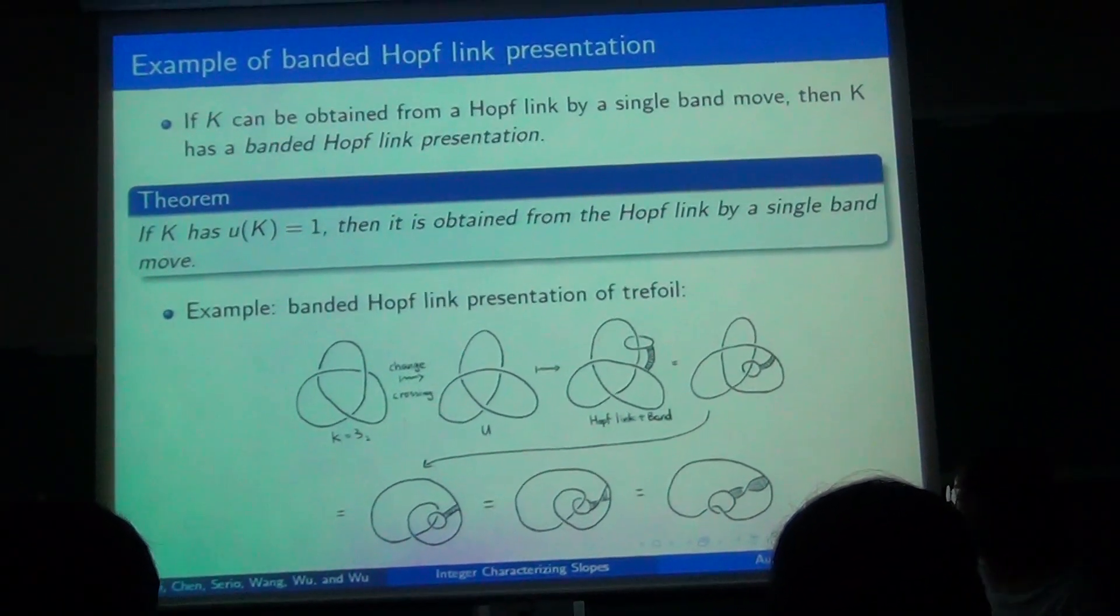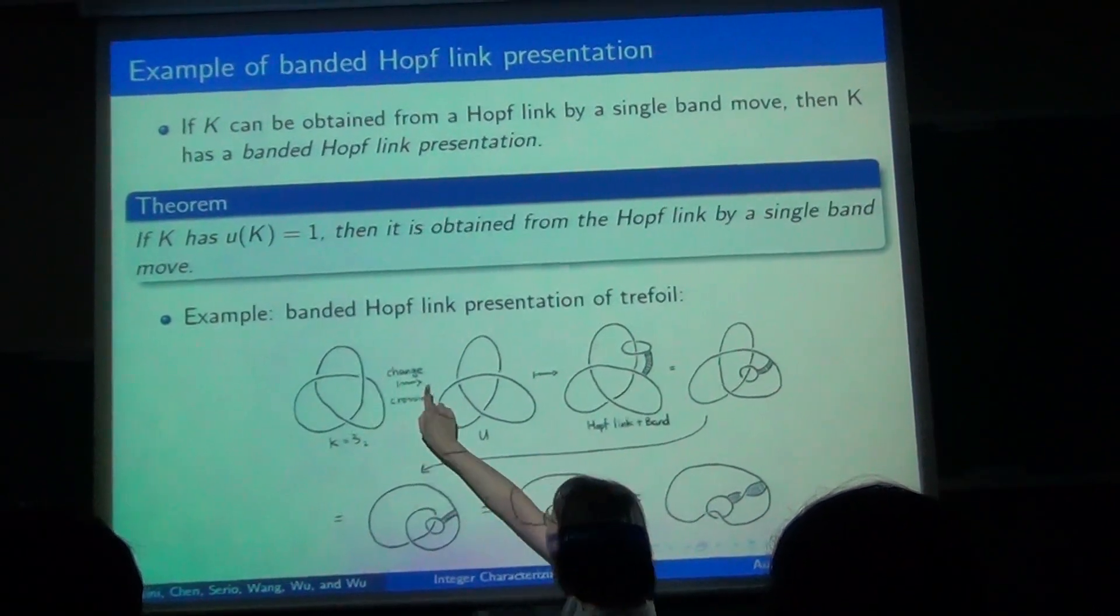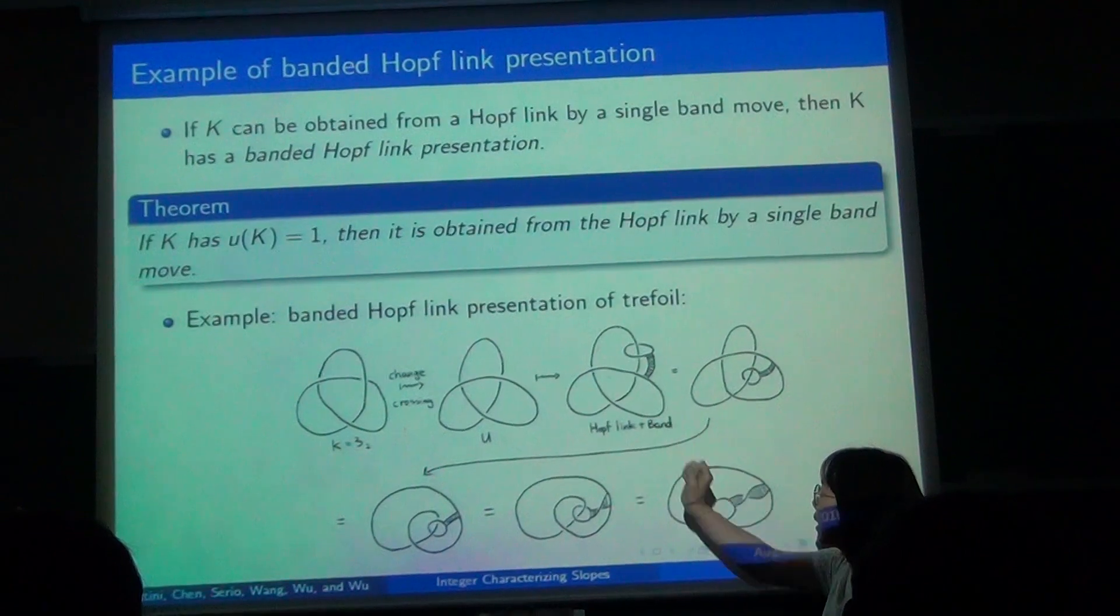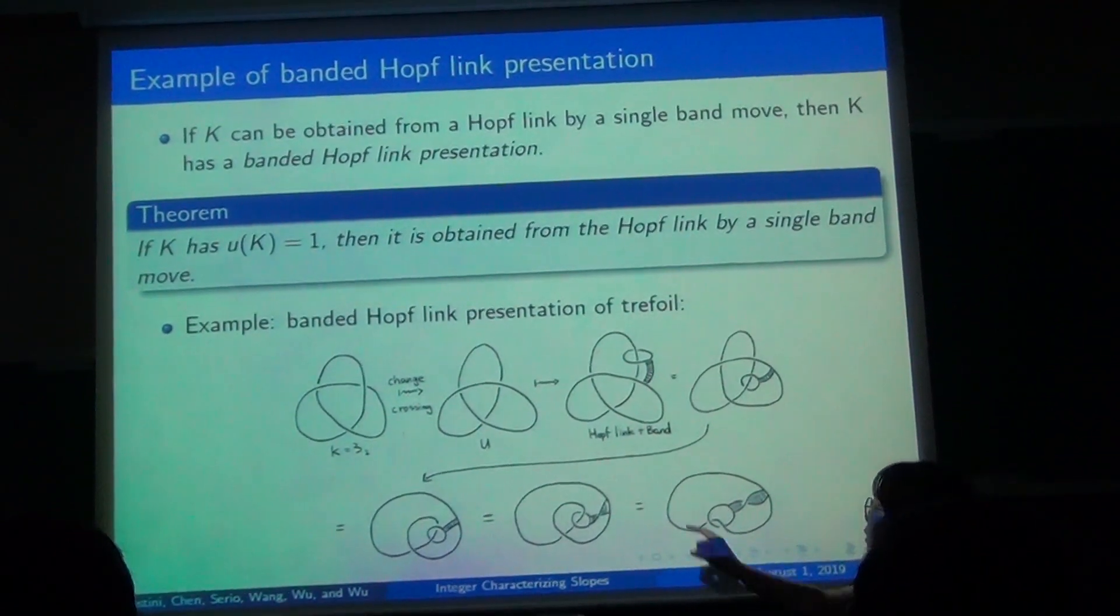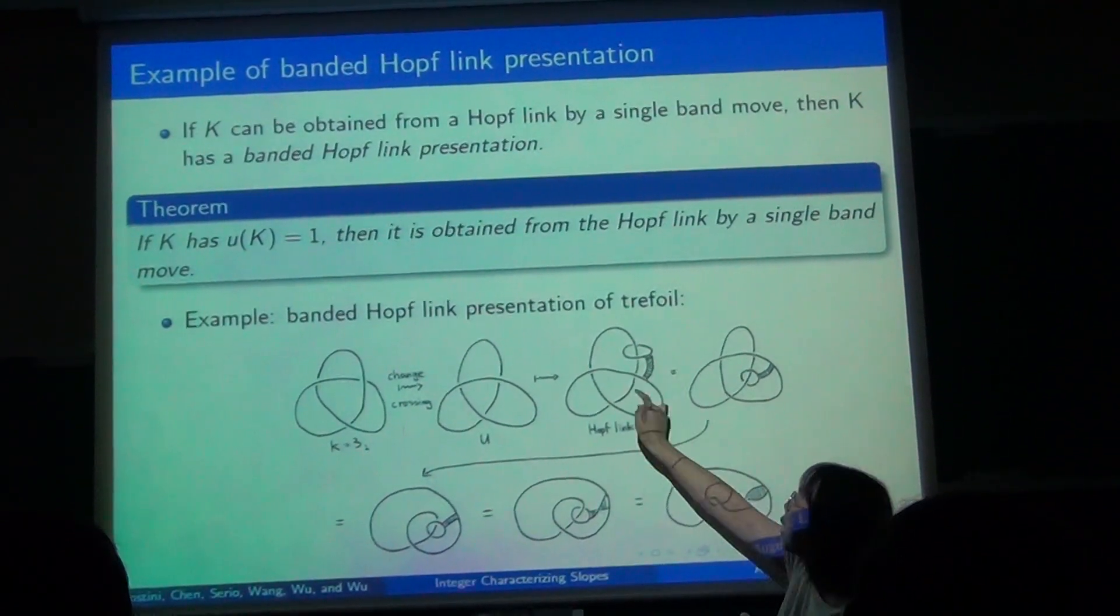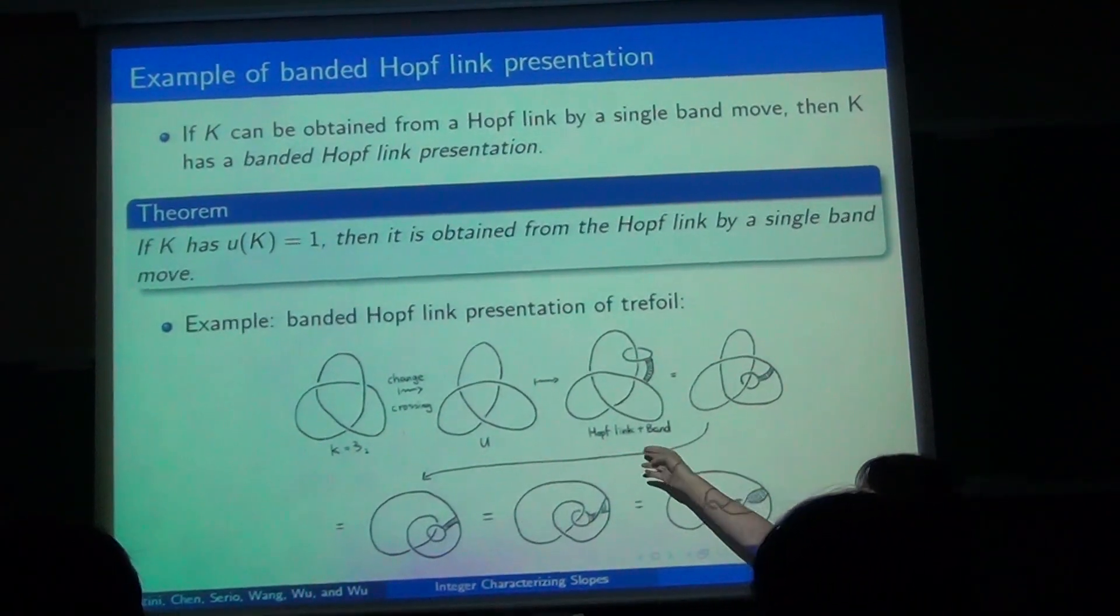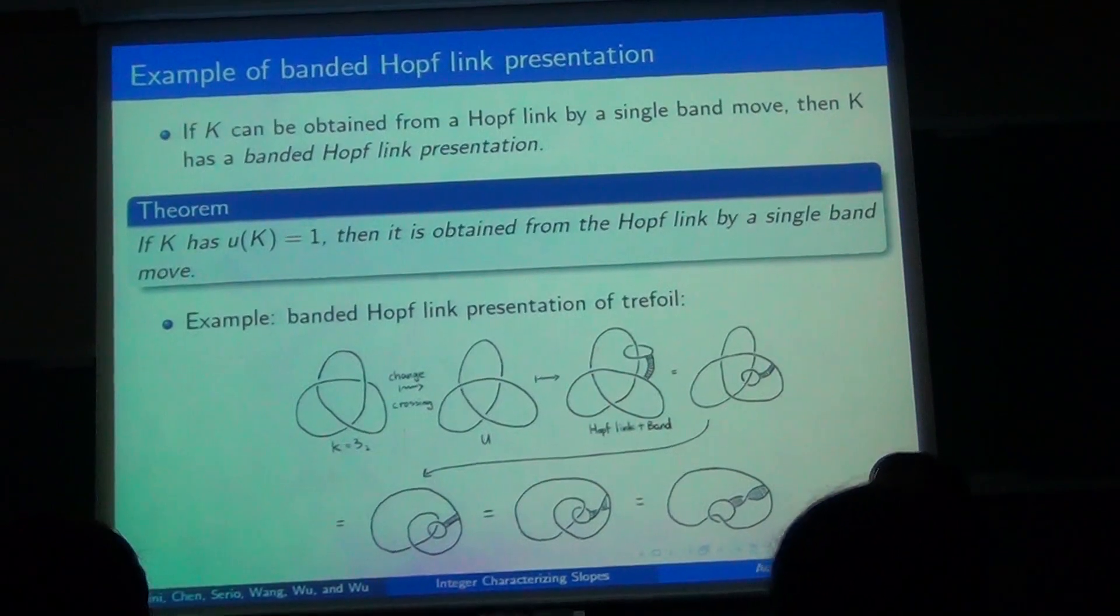So the trefoil is a good example for illustrating this theorem. For the trefoil, we see if we change the crossing, we can make it into an unknot. Then we add another unknot and do a band move. We can see here that if we delete the interior of this band and keep its two edges, we can get back to the trefoil.